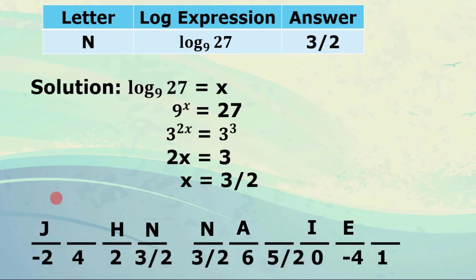For letter N, log of 27 to the base 9. We let it equal x, so 9 raised to x equals 27. Writing 9 as 3 squared and 27 as 3 cubed: 3 squared raised to x equals 3 cubed, giving 2x equals 3. Therefore x equals 3 halves. We write letter N next to 3 halves — it appears twice in the answer bank.